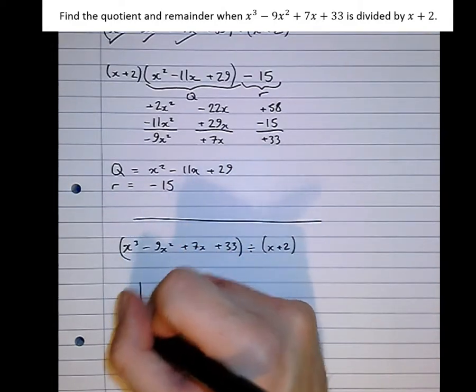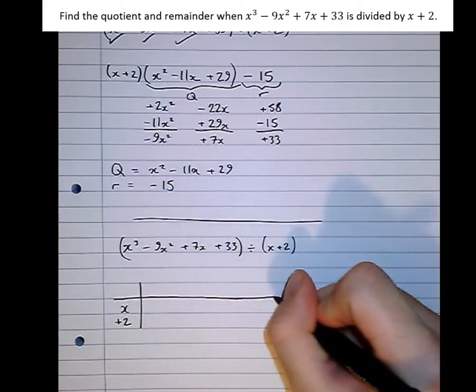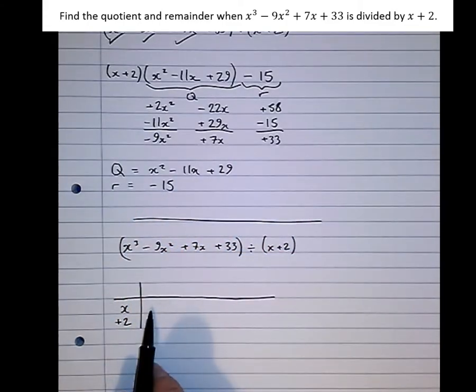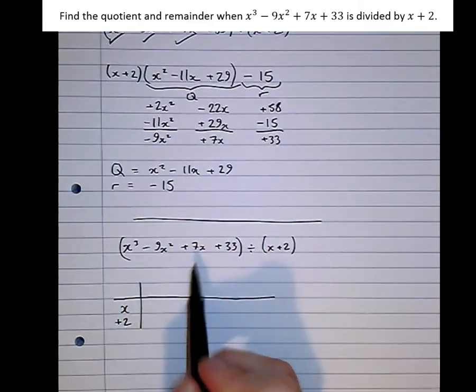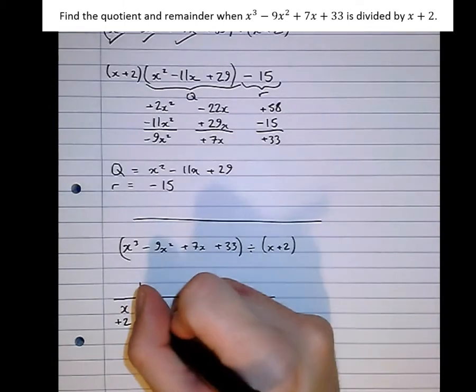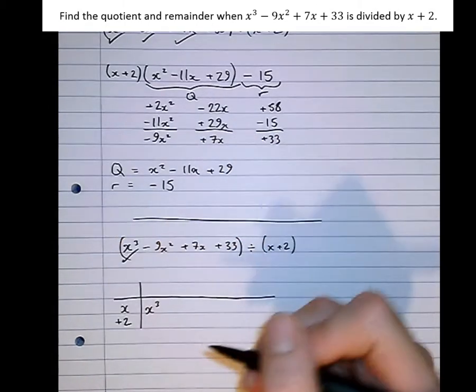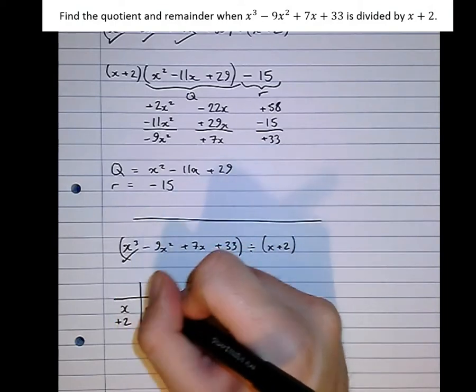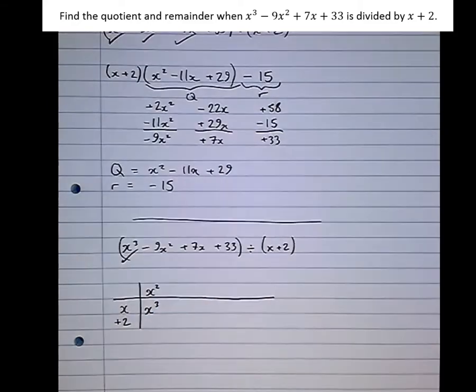So there's x plus 2 as one of the factors. And the answer we need here, on the inside, is x cubed minus 9x squared plus 7x plus 33. So the answer of x cubed goes there. Got that? And what needed to go here to make the x cubed? The x squared. x times x squared is x cubed.